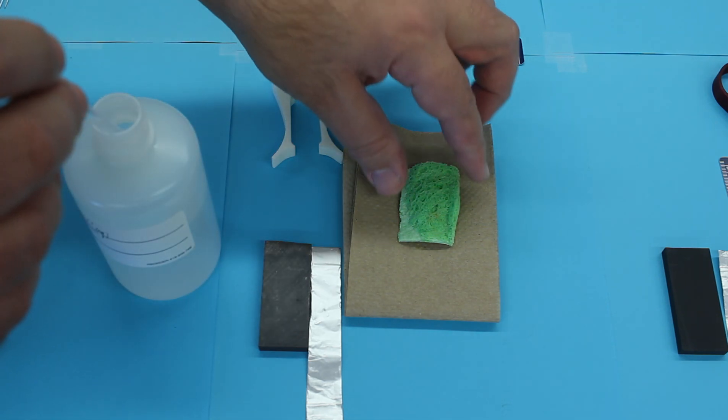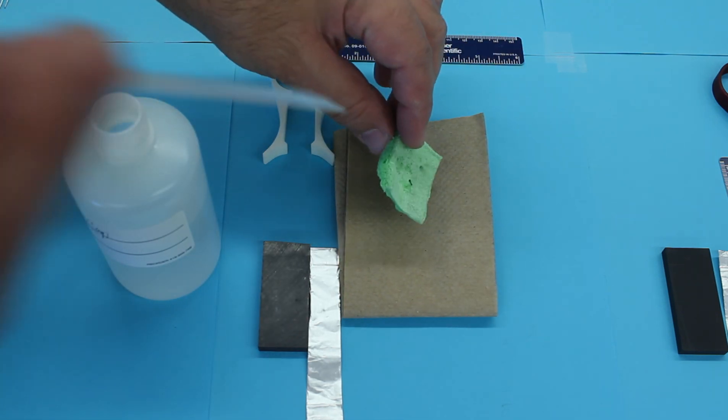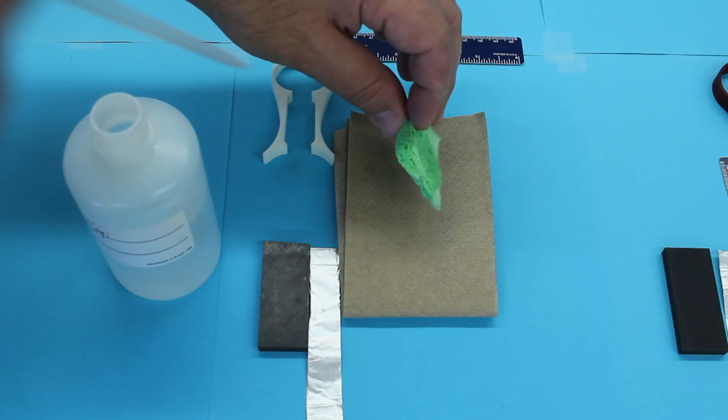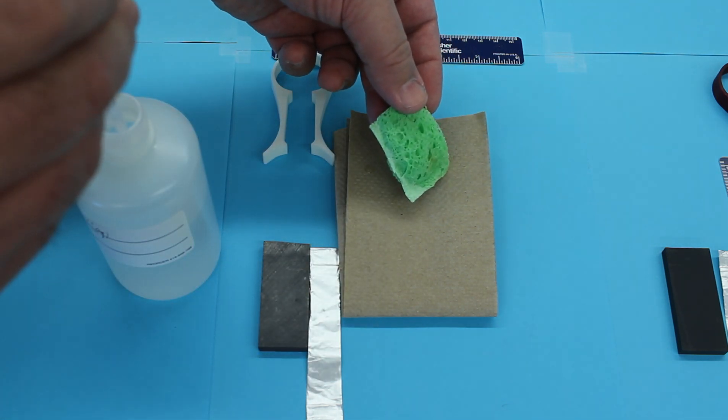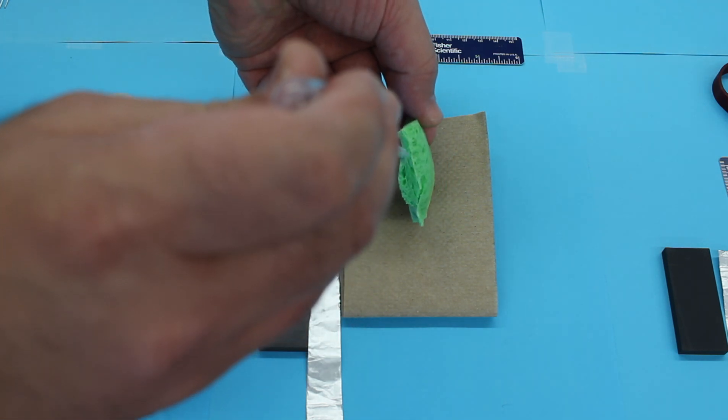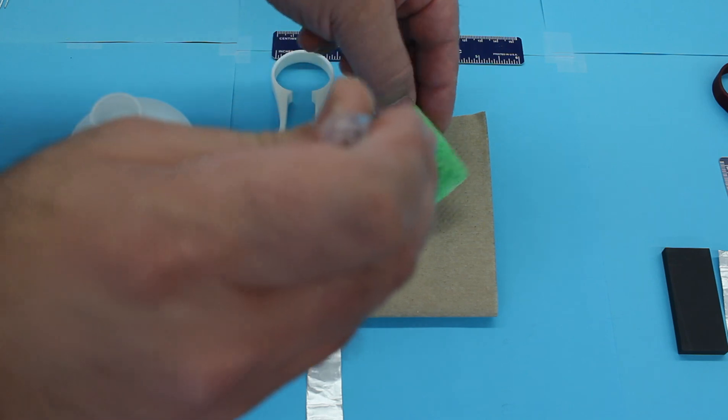And of course, this compressed sponge is now going to start to grow. The students will get sodium chloride solution everywhere. So just be ready for that to wipe everything down at the end.